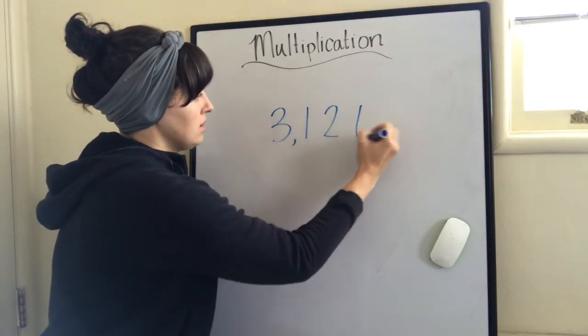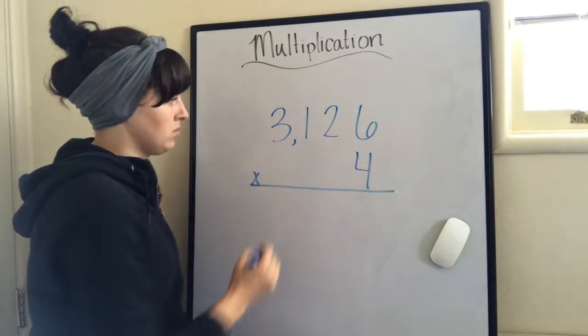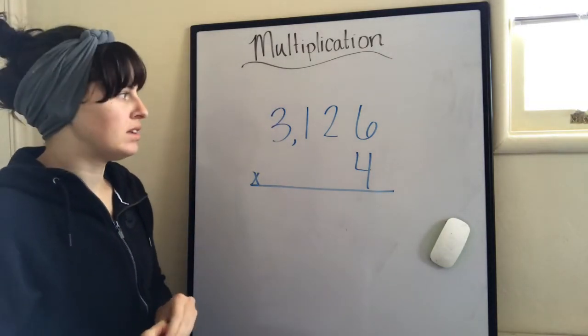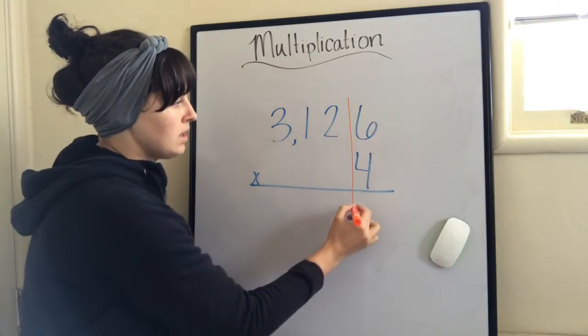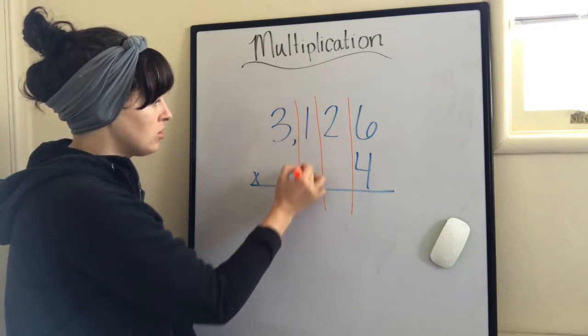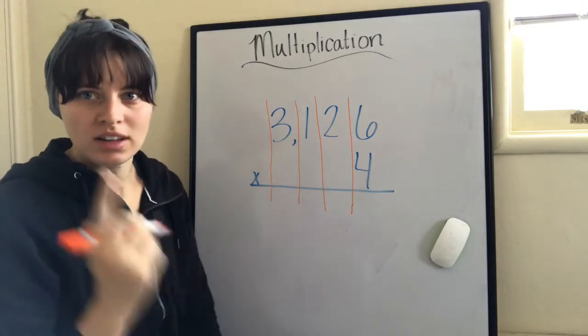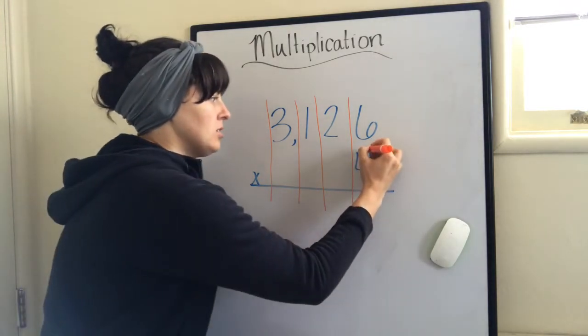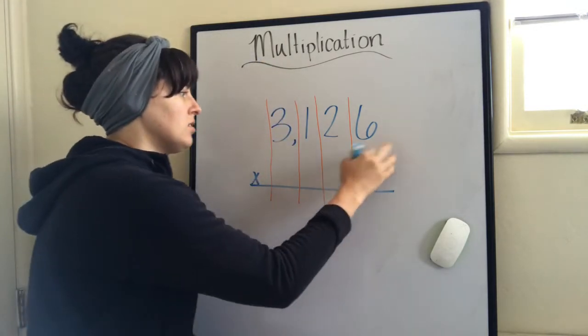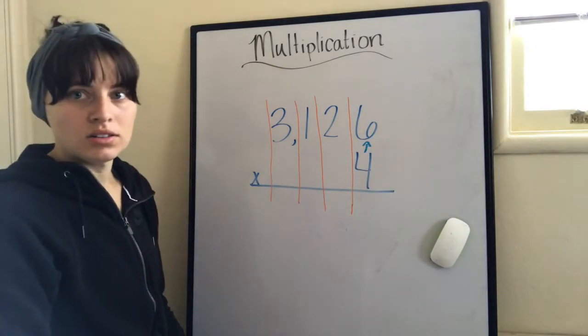3,126 times 4. It's the same thing. We still go in the same order. Ones place, tens place, hundreds place, thousands place. The number I'm multiplying by, I only have one digit. So it's kind of easy. All I have to do is start in my ones place. 4 times 6, 24.